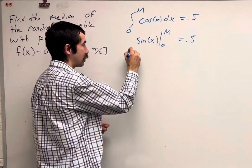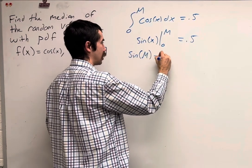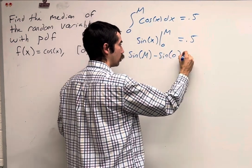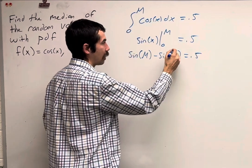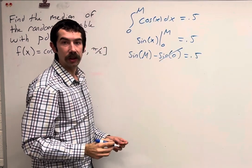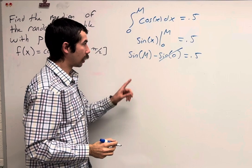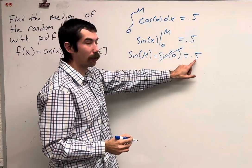This is sine of m minus sine of 0. Sine of 0 is just 0, and so we have sine of m equals 0.5.